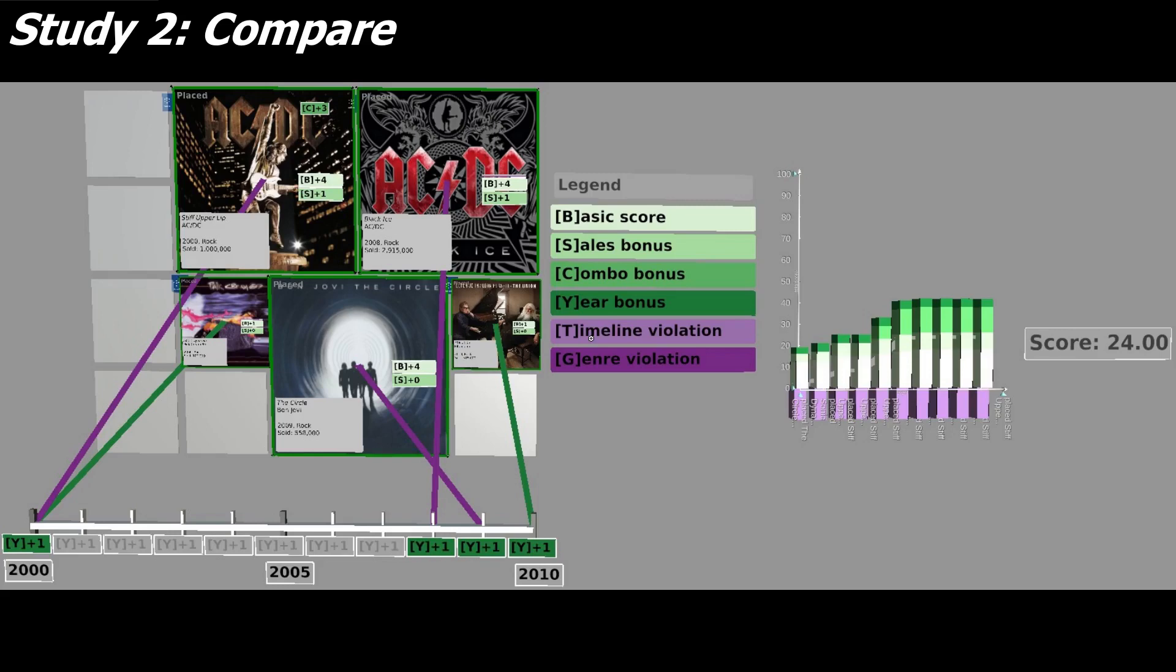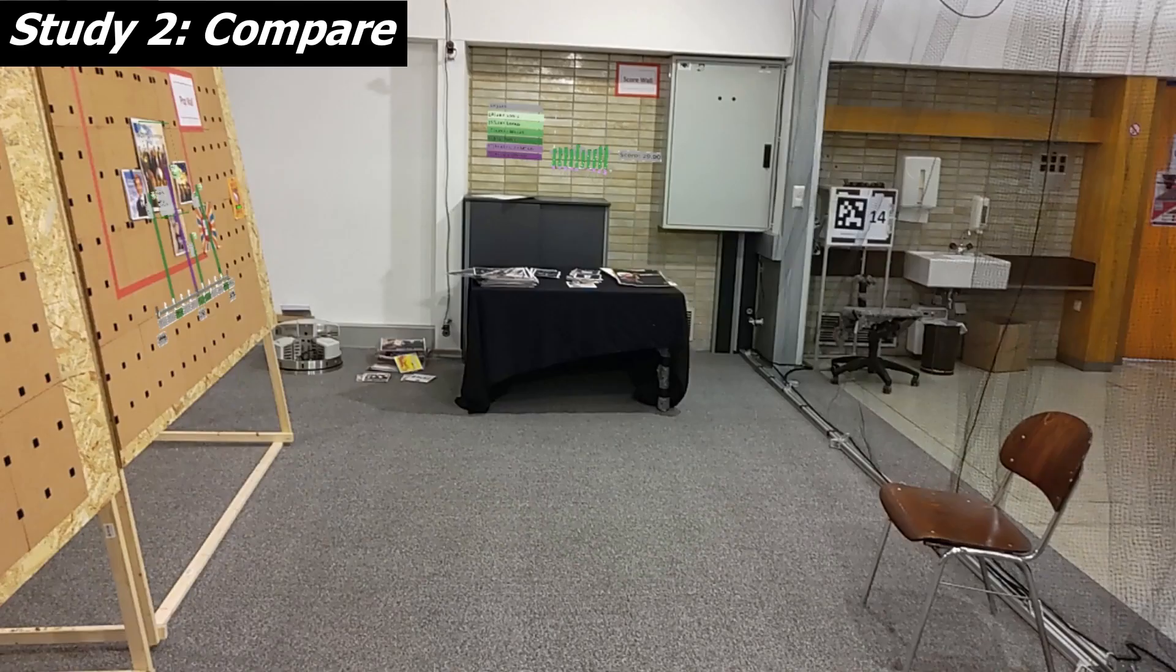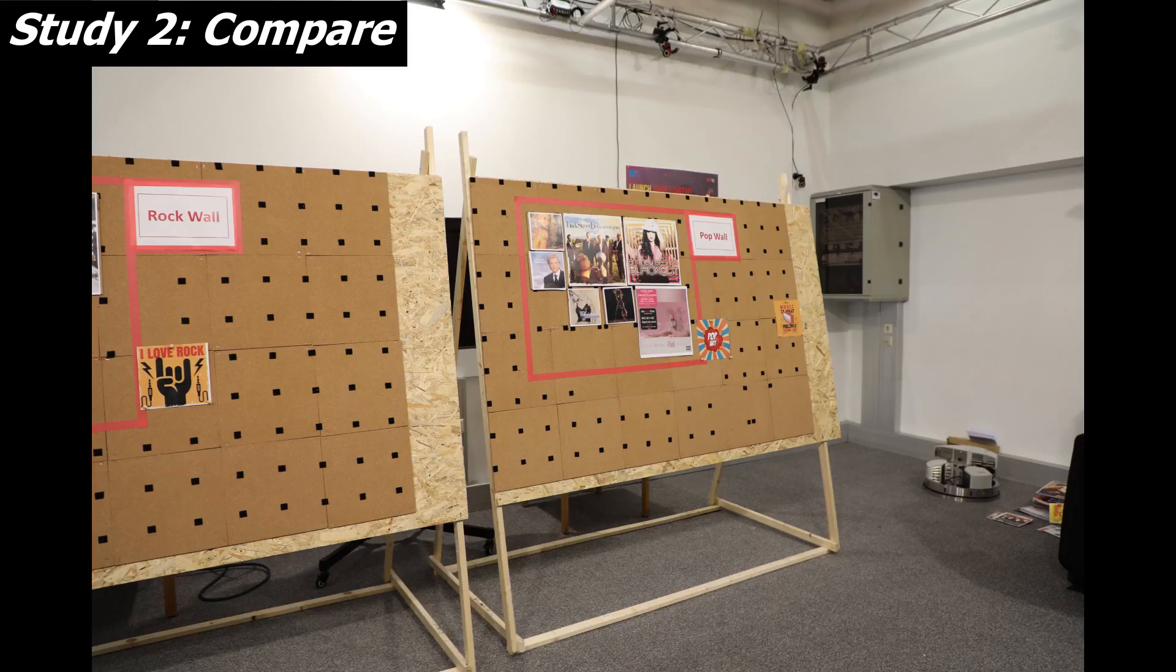One time, using the HoloLens and dataset of 100 records acting as reference, and secondary on the iPad using a different dataset of 100 records. The target is to increase the computed score by populating the rock and pop wall with records accordingly.